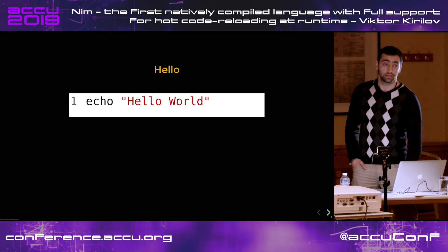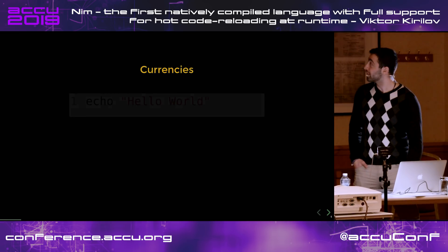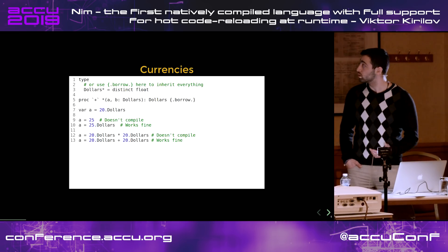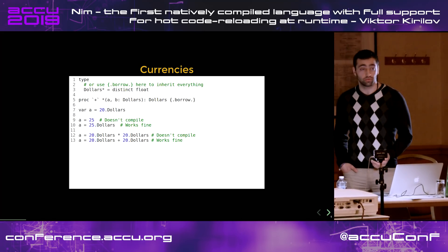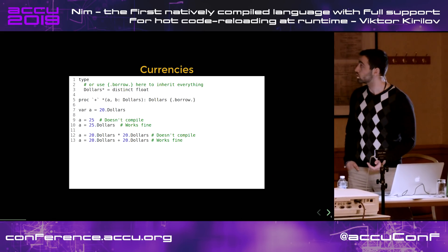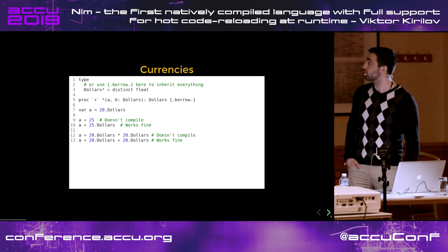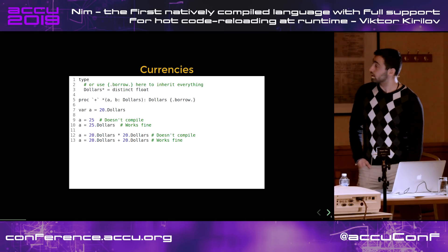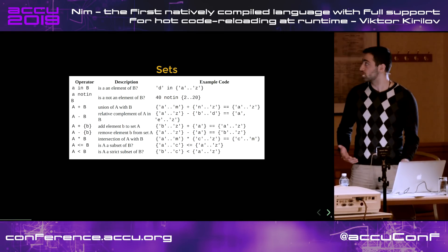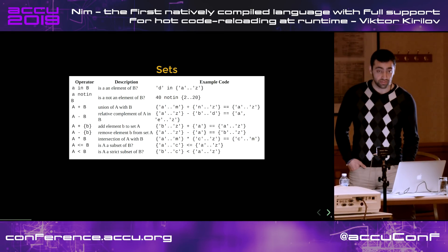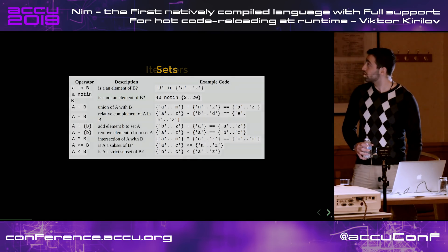This is the hello world in NIM — it's an awesome language. If you want to implement currencies, you can just say that dollars are a distinct float, then borrow the different operators, and you can even borrow all of the operators for float. So it's really easy to make a distinct type, which is really convenient. The idea here is not to really learn the language, but just to show a bunch of things the language is actually really cool at. Working with sets and flags is a real joy.